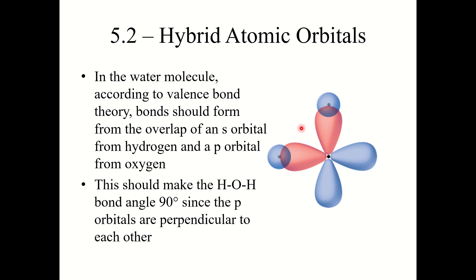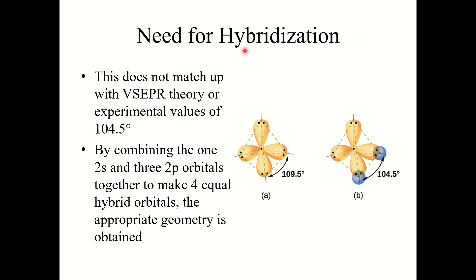So what's the issue? How can we reconcile valence bond theory with VSEPR theory? This comes from our need for hybridization. The experimental value for that bond angle is around 104.5 degrees. In hybridization, the key word is 'hybrid' — we are going to combine 2s and 2p orbitals to make hybrid orbitals, and once we do that, the appropriate geometry is obtained.